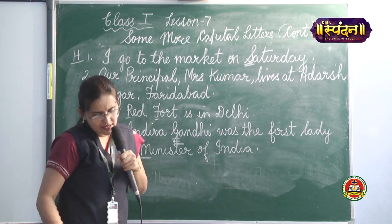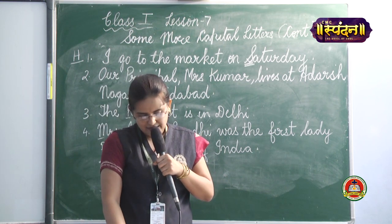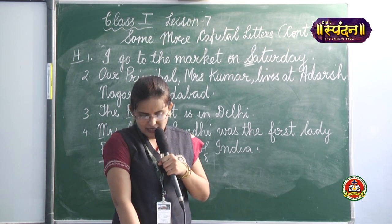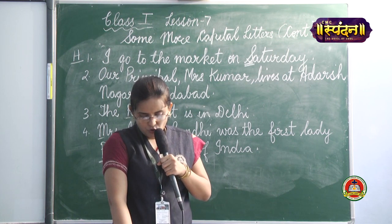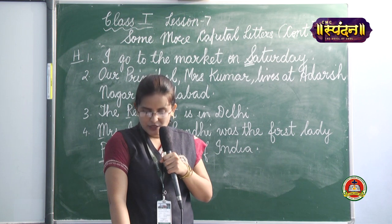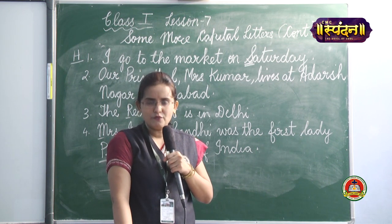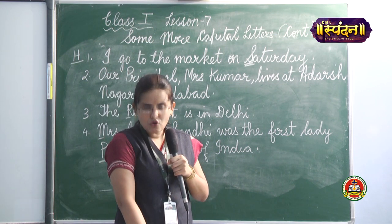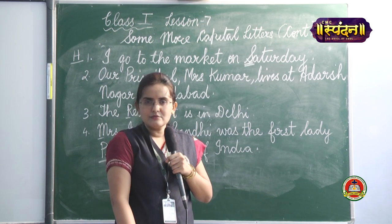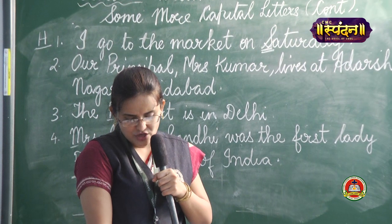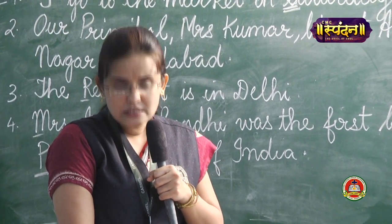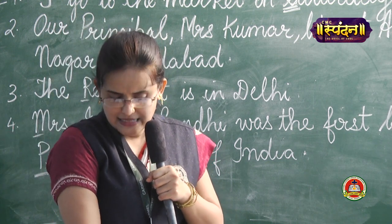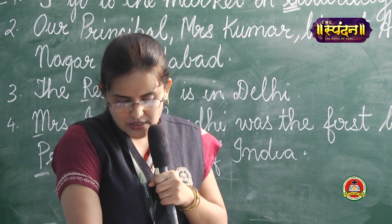'My grandfather R.K. Goyal reads the Ramayana on Sundays.' So M will be in capital, R.K. Goyal as a special name will be in capital, Ramayana's R will be in capital as it is a holy book, and Sunday is a special name of a day of the week so it will also be in capital. 'London is the capital of the United Kingdom.' L will be in capital, United Kingdom's U and K will be in capitals. 'Children love to read story books.' Children is the first word in the sentence, so C will be in capitals.